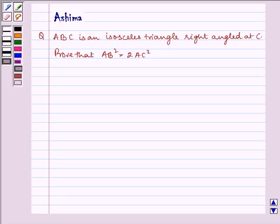Hello and welcome to the session. Let us understand the following question today. ABC is an isosceles triangle right angled at C. Prove that AB squared is equal to twice of AC squared.